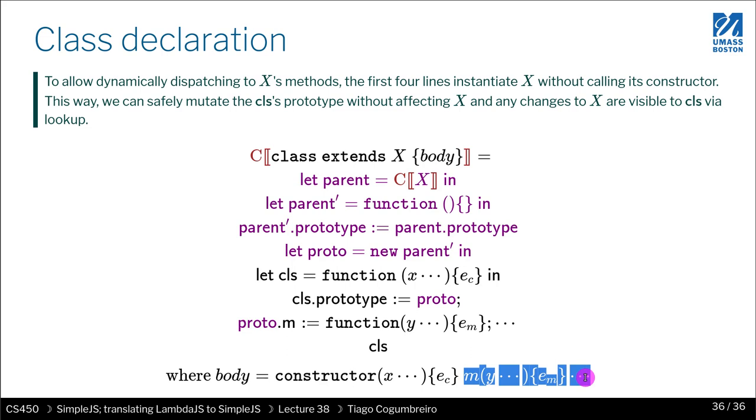And then what you need to do is go through the body. The body can have two kinds of things, right? It has to have at least one constructor, and that's what this body thing is trying to explain here. You have at least one constructor, and then it's followed by n number of methods. Each method should just be translated as assigning proto.m. You have your the prototype that you just looked up from the class, which is a function, and then you assign for each field, for each method that you define, you assign it to the variable.